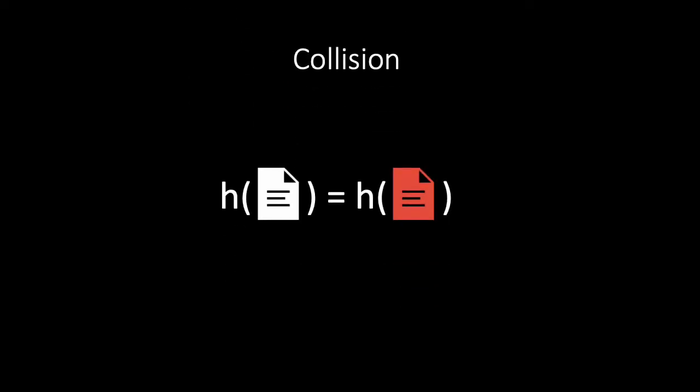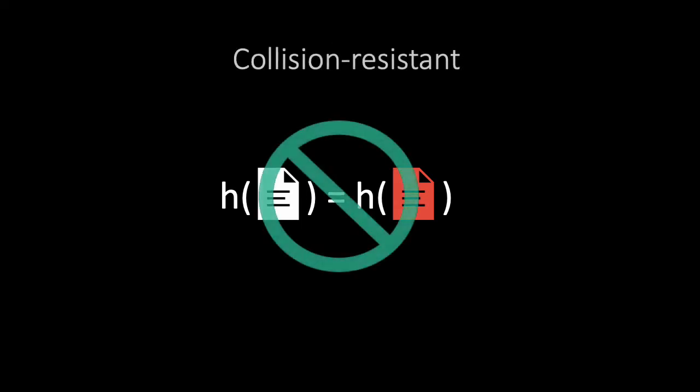If we find two input values that are mapped to the same hash, we say that we found a collision. Note that collisions always exist, since a hash function maps values from an infinite domain to a finite domain. A hash function is called collision-resistant if it is difficult to find any such collision.